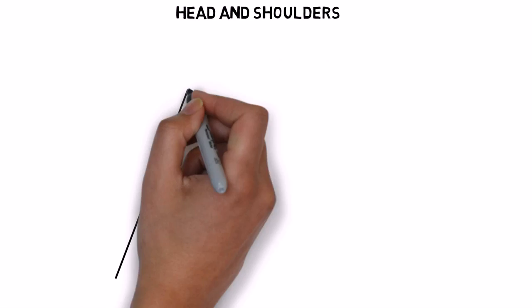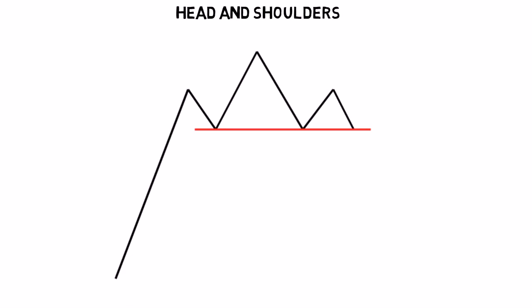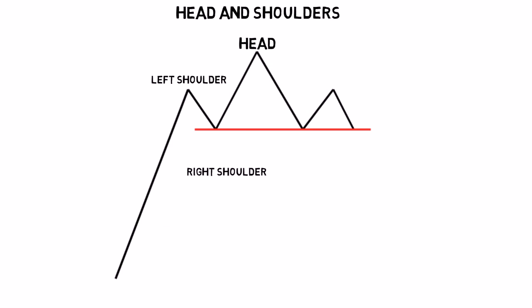Head and Shoulders is a bearish reversal pattern which forms after a strong move upwards. It consists of a peak as the left shoulder, a higher peak as the head, and a lower peak as the right shoulder, with a neckline drawn connecting the two lows between the shoulders.